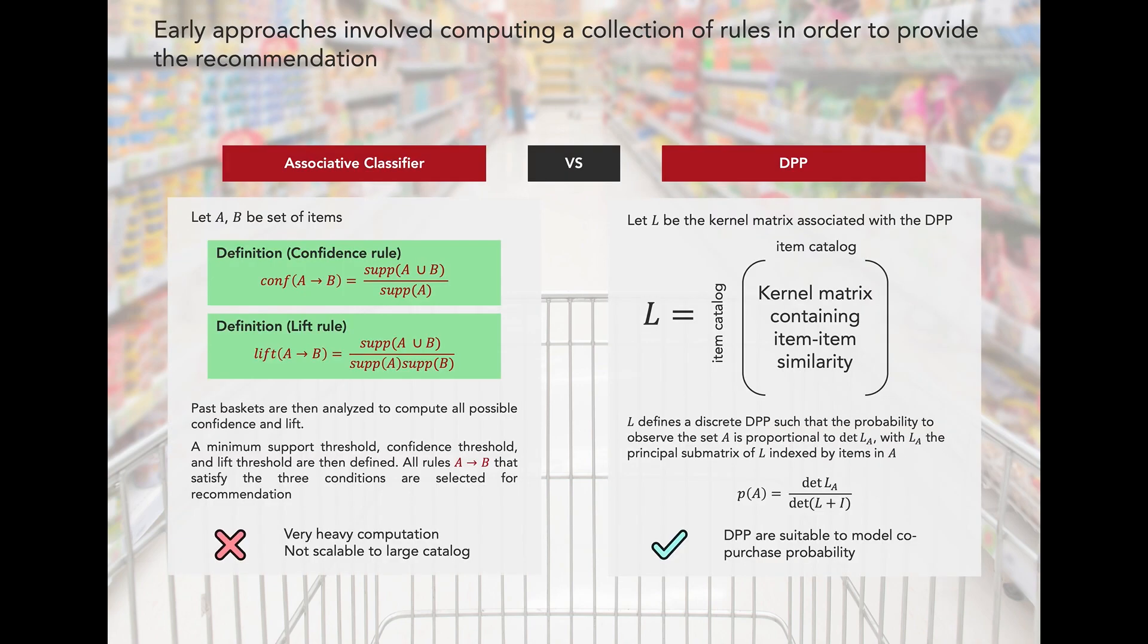A common approach for solving the basket completion problem is to use an associative classifier, which involves building a multi-class classifier from a collection of association rules, which are in turn built based on selected confidence and lift thresholds. This approach is expensive to train and can be difficult to scale to large item catalogs.